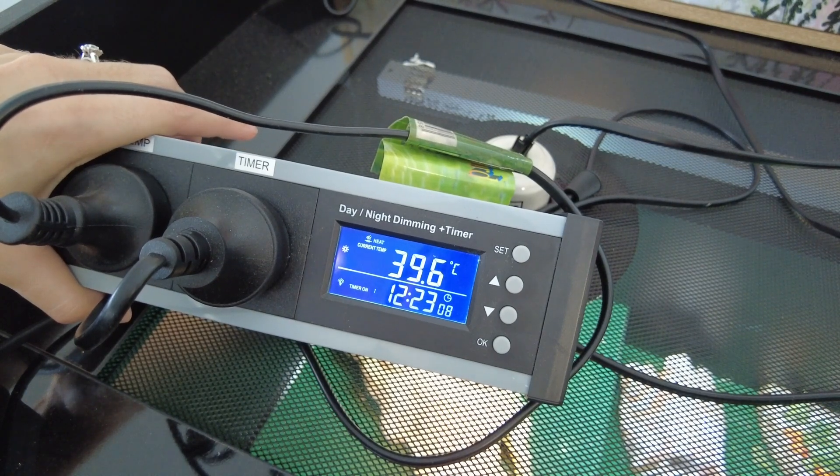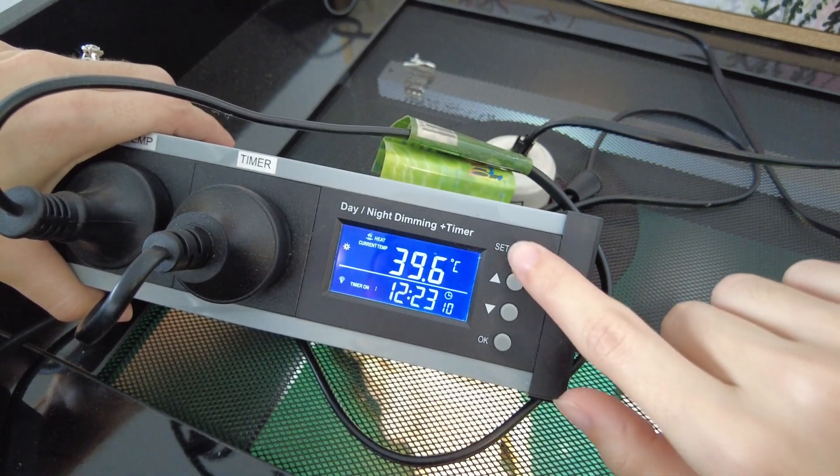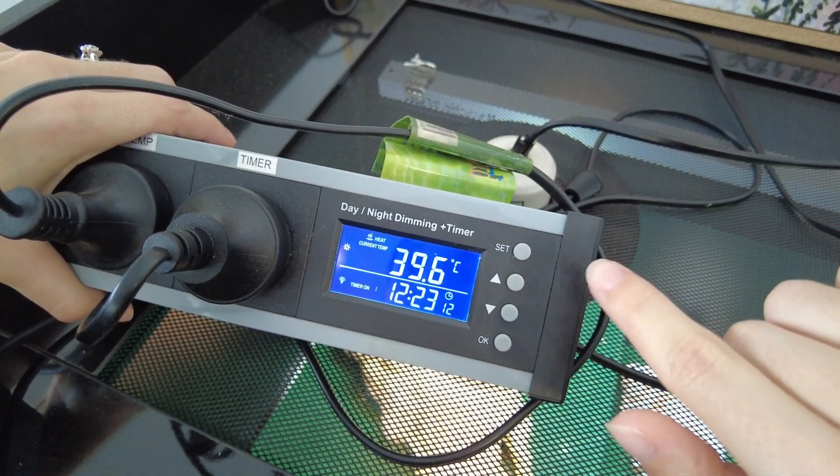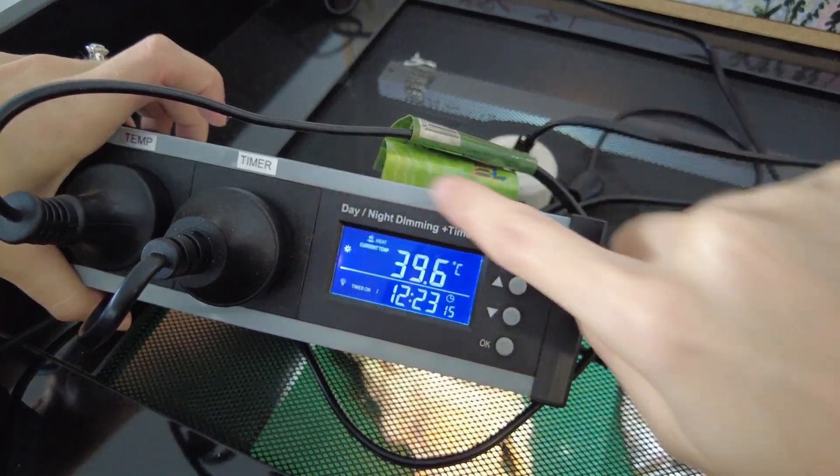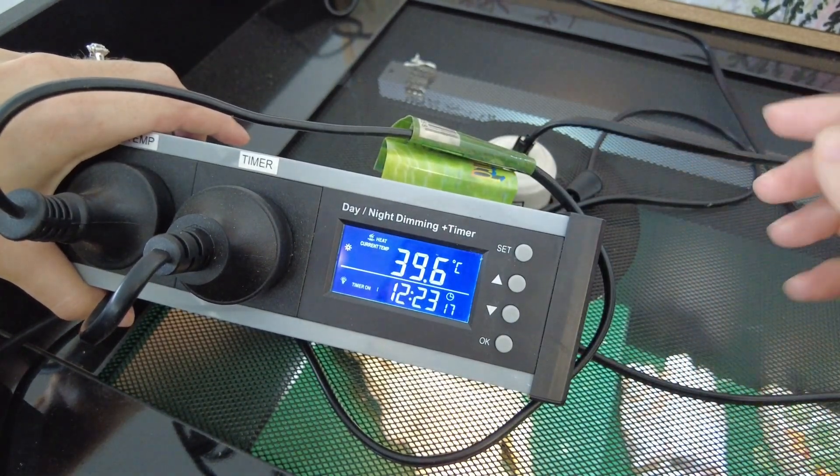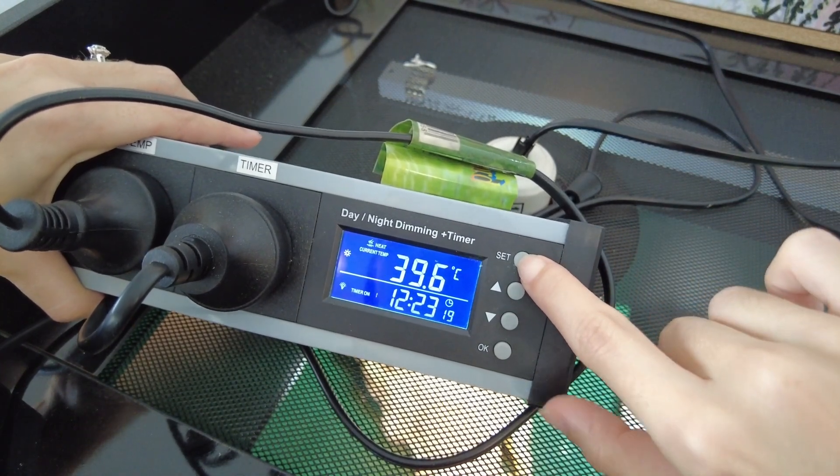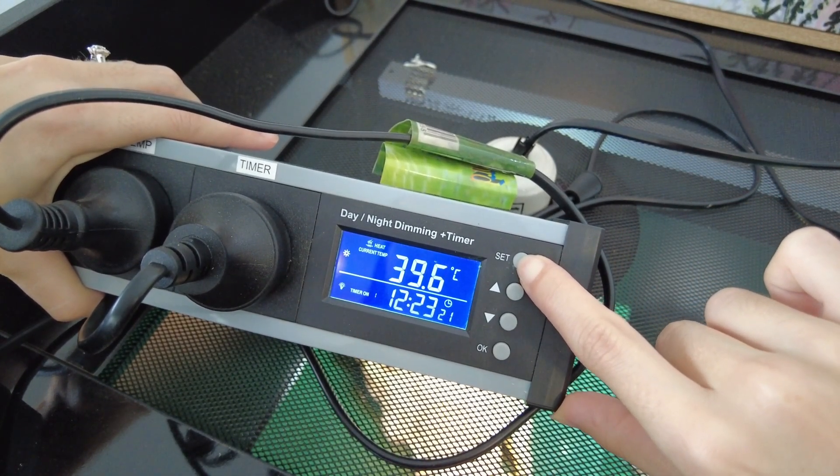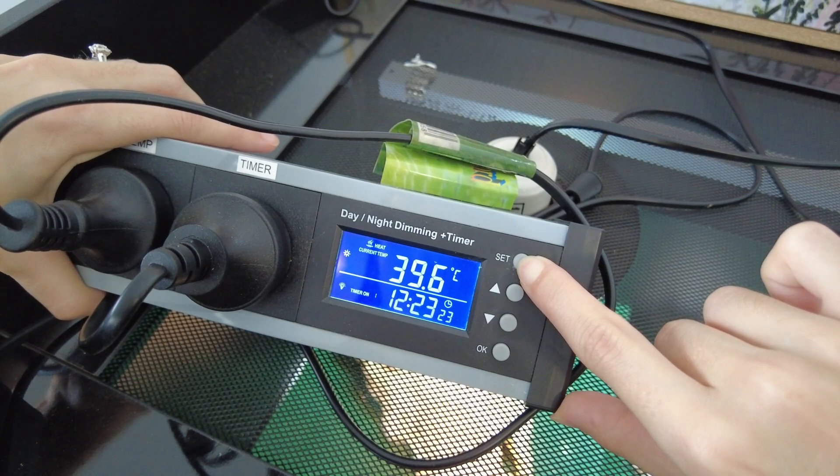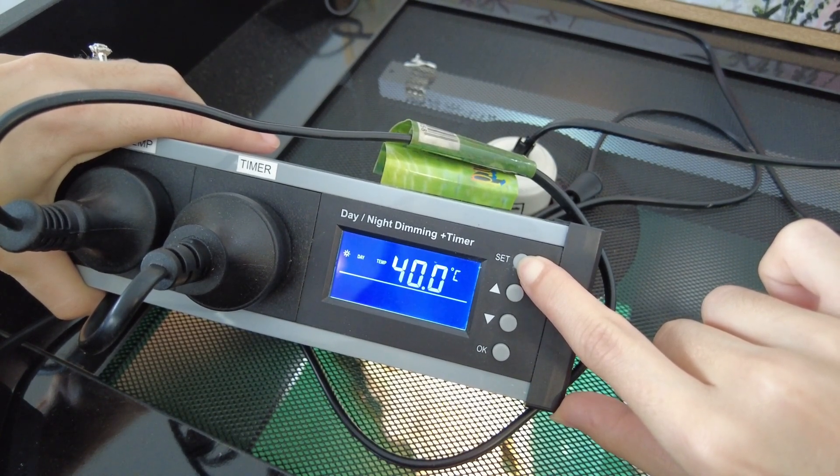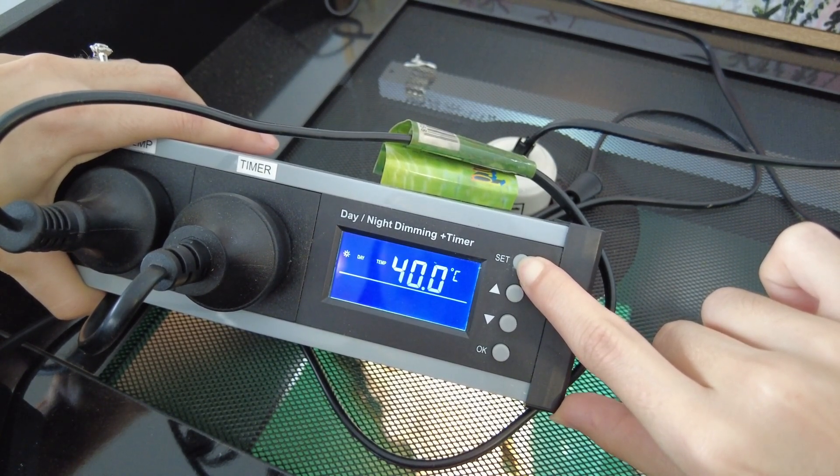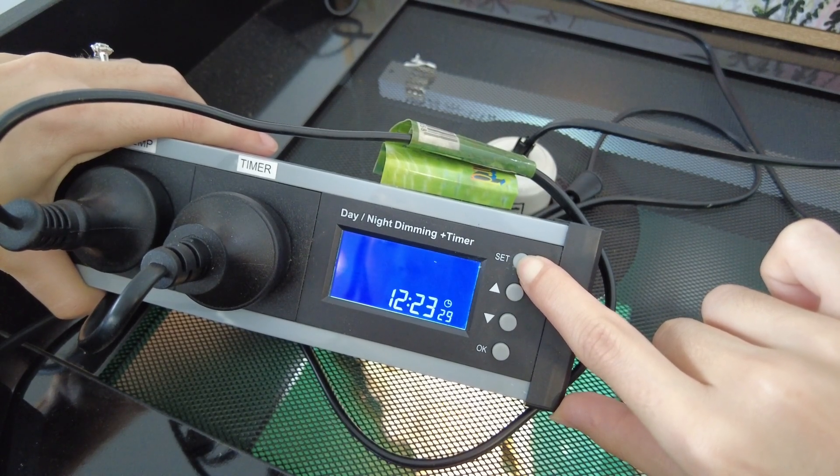Now the next thing that we're going to want to do is our timer to specify when day and night is, and then also when we actually want our UVB light to be coming on and off. So to do that we're going to hold down set again, and this time keep holding it. So keep holding it past temperature until we get to our time. All right, there we go.